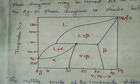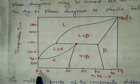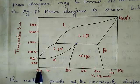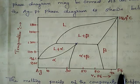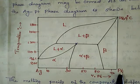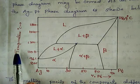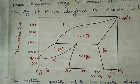The x-axis represents the percentage composition, with Ag at 100% on the left side and Pt at 100% on the right side. The y-axis represents temperature.